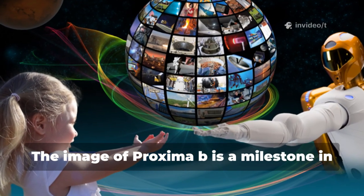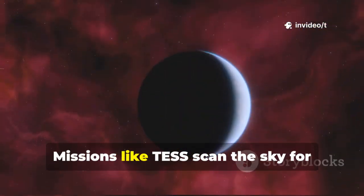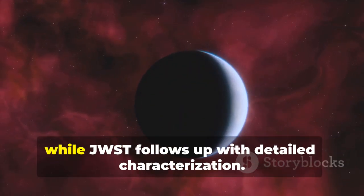The image of Proxima b is a milestone in NASA's ongoing search for exoplanets. Missions like TESS scan the sky for exoplanets using the transit method, while JWST follows up with detailed characterization.